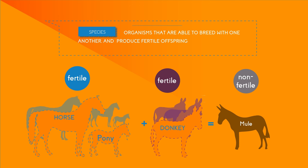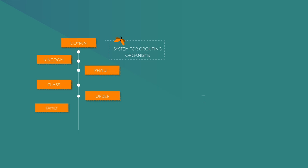However, although horses may mate with donkeys, their offspring will not be fertile. This means that horses and donkeys are placed in separate species groups, even though they are very closely related to one another.